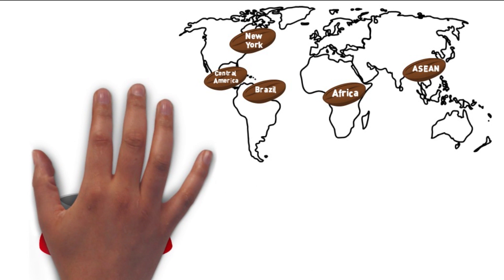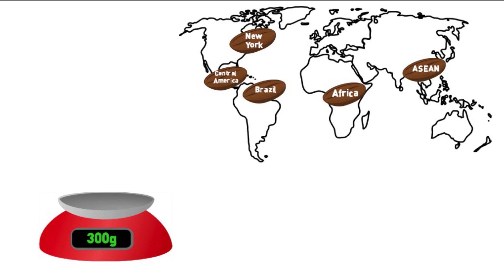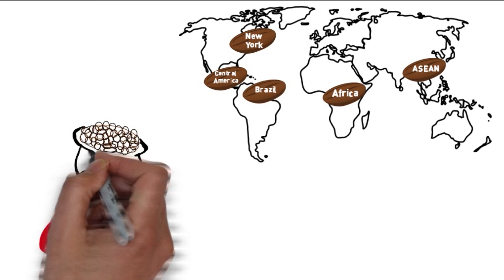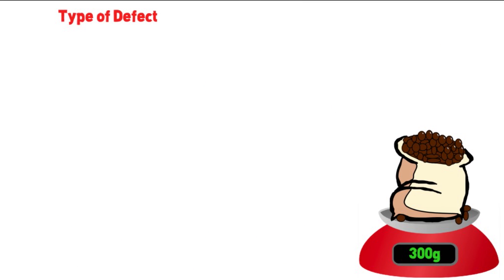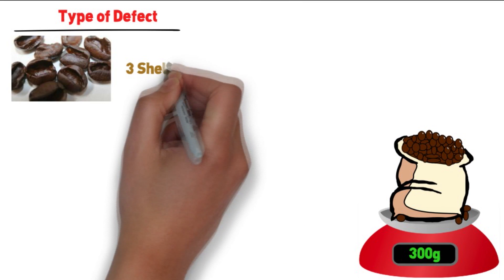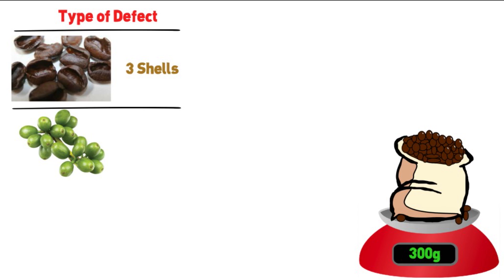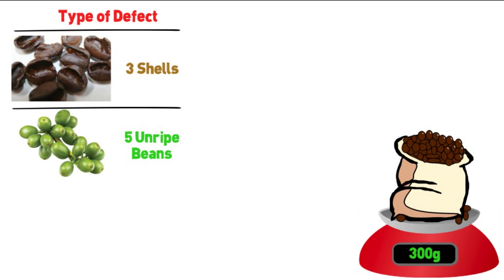The most important classification type is determined by the number of defects sorted in a 300 gram sample from the actual lot. A defect can be three shells, five unripe beans, or one large stone.